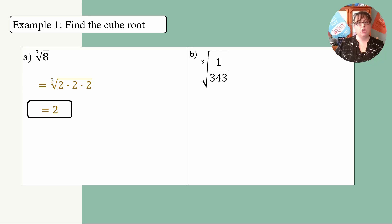So what happens when I have the cube root of 1 over 343? Well, in the same way that square roots let me split up a fraction, I get to do the same thing with cube roots. So I'm going to take the cube root of 1 and the cube root of 343 and do that.